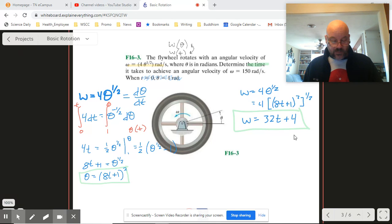And the only thing that would be left to do is to set omega equal to what it tells us there, the 150, and solve 32t plus 4 - solve that for t. And now we've got our answer.